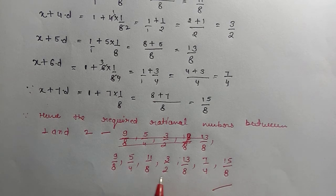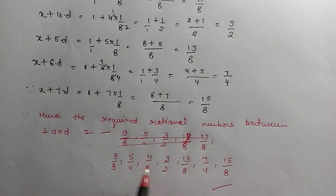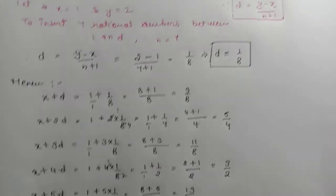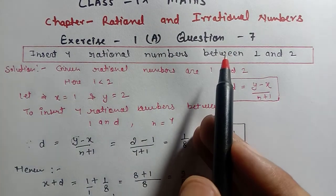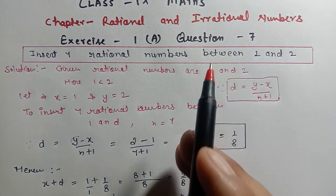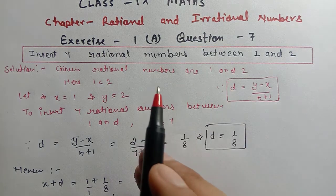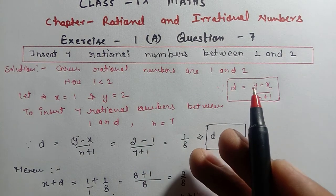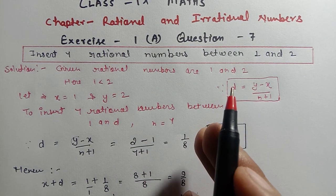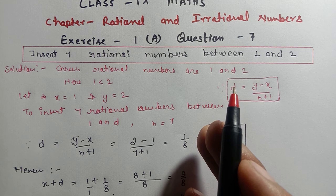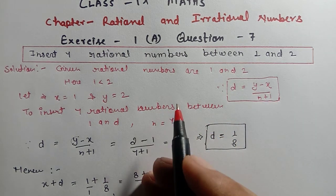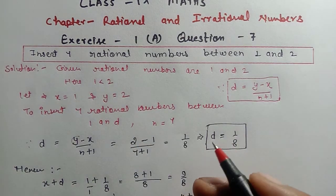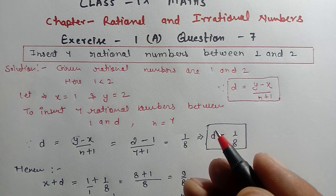These are the required rational numbers between 1 and 2 — all seven. I hope Exercise 1A question number 7 was explained clearly. If you have any doubts, please comment in the comment box. If you liked my video, please subscribe to my channel and don't forget to press the bell icon so you get all upcoming notifications. Thank you.